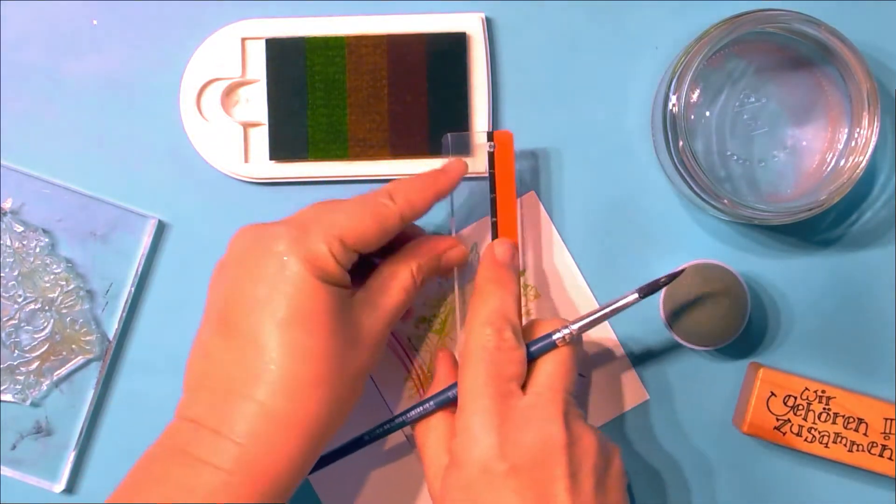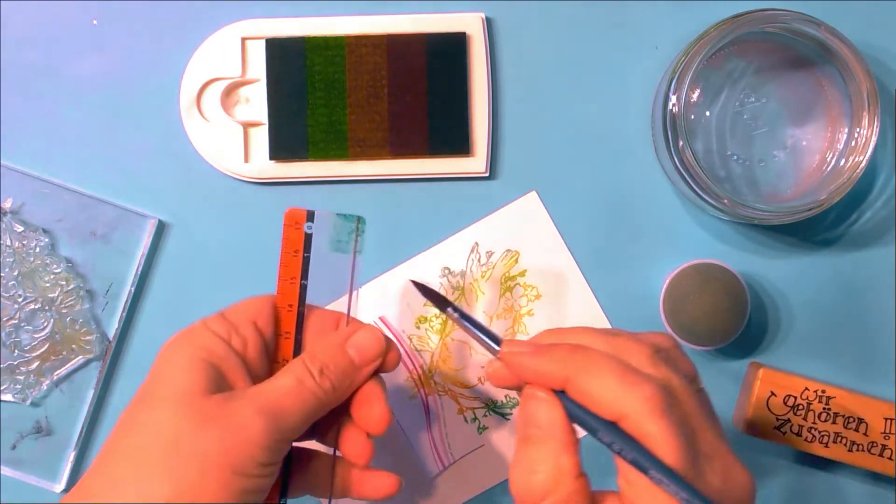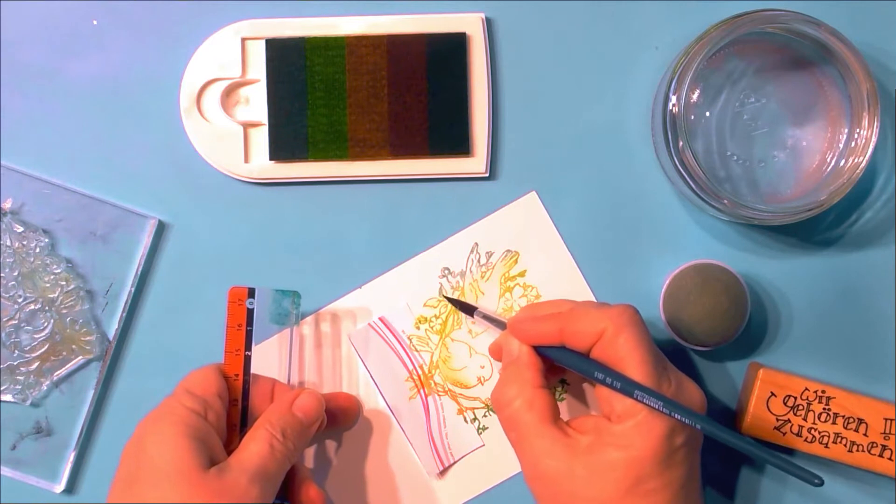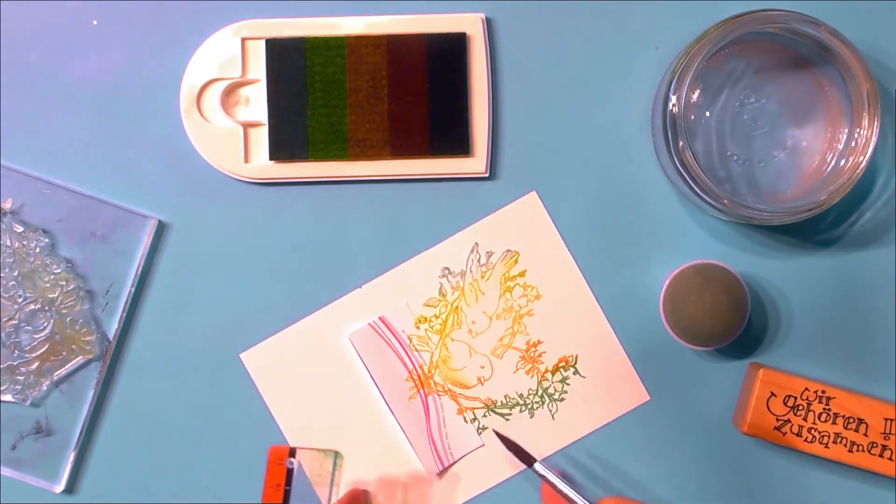If you want to add more color to your watercolor print, you can use a plastic ruler like this and pick up some of the color to add a little bit of more shine and detail.